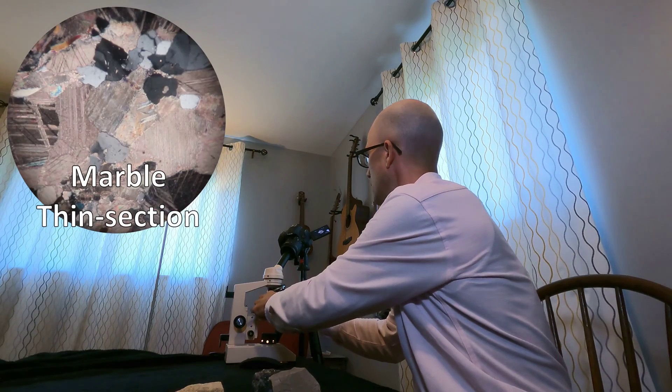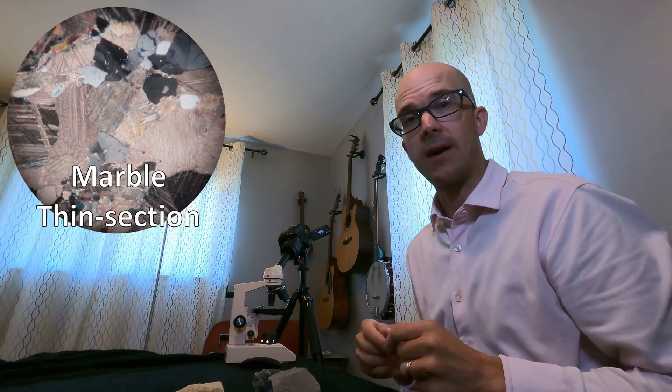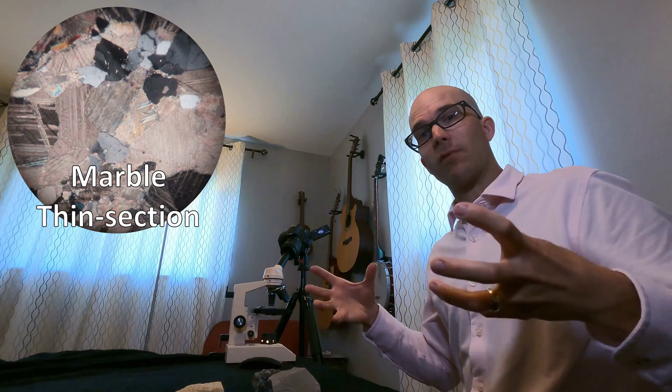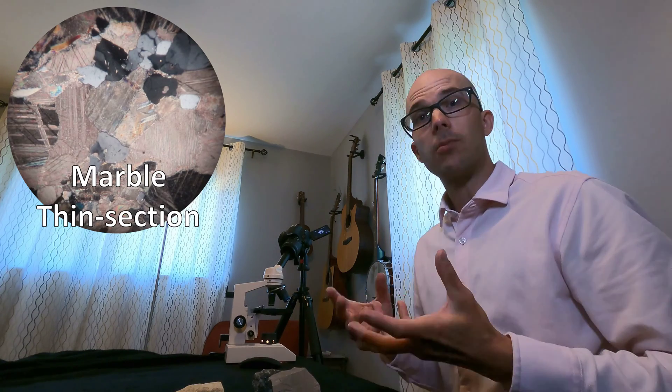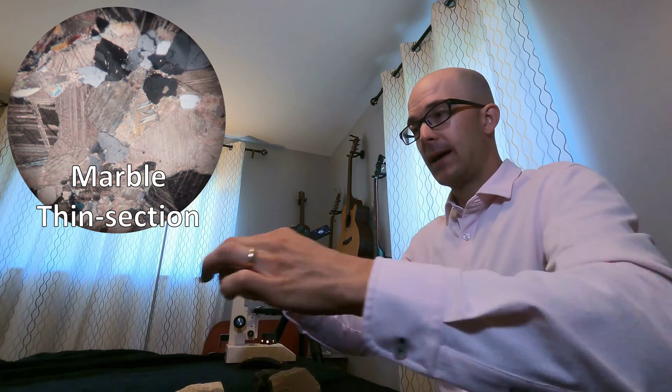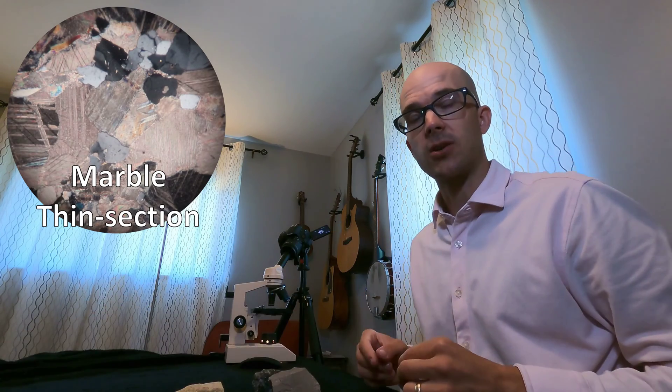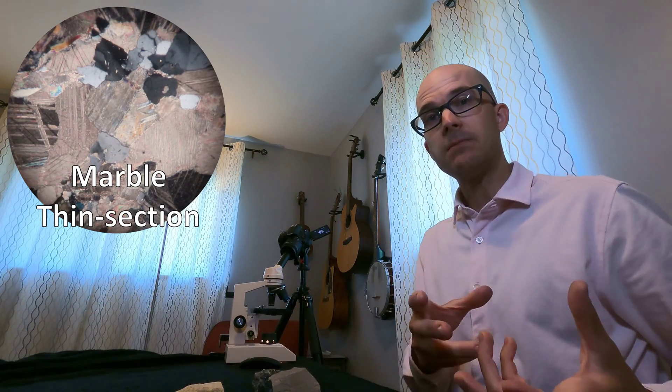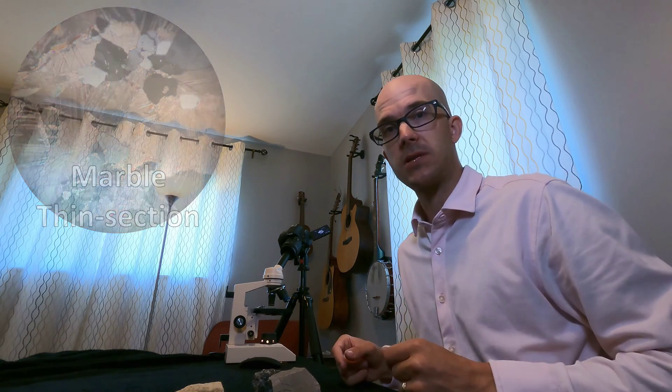Here is marble's thin section. You can see all those beautiful calcium carbonate crystals that were formed by that heat and pressure. Marble looks quite a bit different from limestone, both in terms of its sample and also in terms of its thin section. And that's because marble is limestone, which has been metamorphosed.